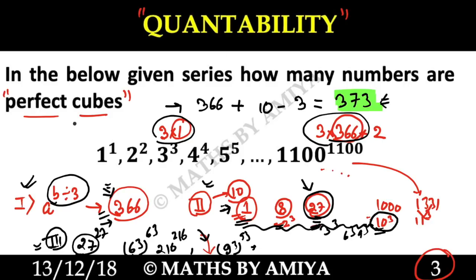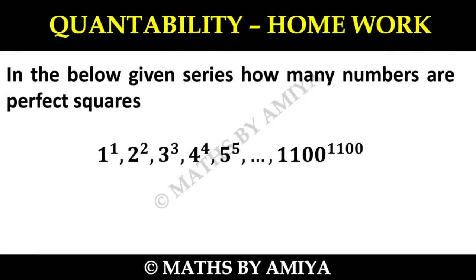I hope it's clear. Whatever questions come like this, you can solve them. Cube means power divisible by 3. If you have any doubt, please rewind the video and try to solve the question. The answer is 373. Now here's your homework. In the below given series, the series is the same, how many numbers are perfect squares? Do your calculation, find set one, set two, and the intersection part to get the answer. If you have any doubt, you can ping me on any social networking site. I try to give my level best, and with all the best wishes, myself Amiya. God bless you, happy learning, and bye bye.